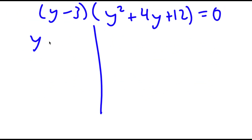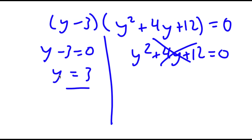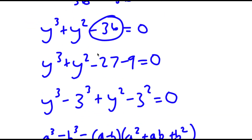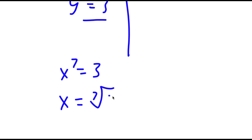This gives me two equations: y minus 3 equals 0, meaning y equals 3, and y squared plus 4y plus 12 equals 0. Using the quadratic formula on the second equation, the discriminant turns out to be less than 0, so it has no real solutions. Therefore y equals 3 is the only solution. Since we let x to the power of 7 equal y, I now have x to the power of 7 equals 3, meaning x equals the 7th root of 3.